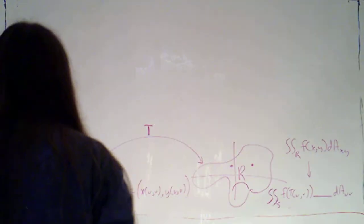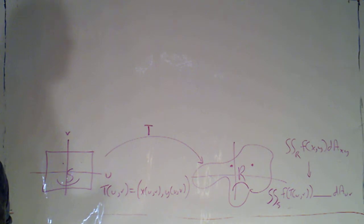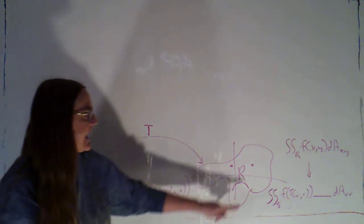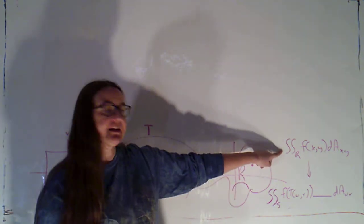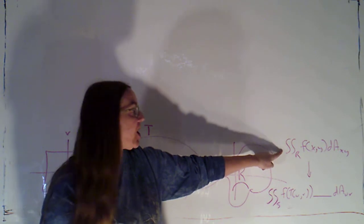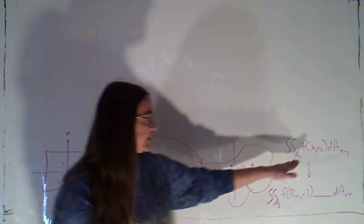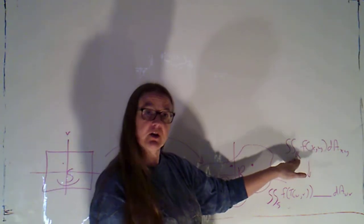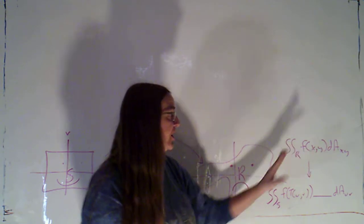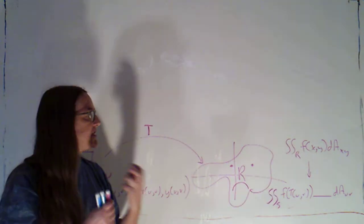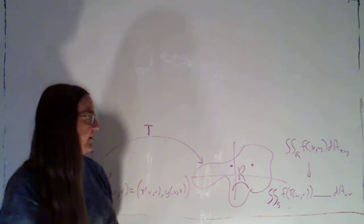Okay, so I've kept this picture up here on the board. The scenario that we have is that we want to do this double integral over some region R. And for some reason, and it could be because we don't like the integrands, or it could be because we don't like the region R, we decide that we want to change to doing a different integral with different variables.